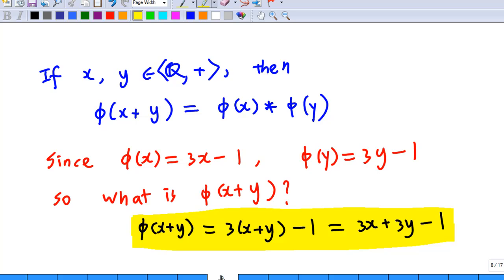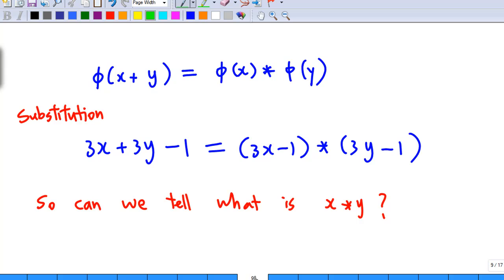So substitute this information: phi of x plus y is 3x plus 3y minus 1, phi of x is 3x minus 1, and phi of y is 3y minus 1. Then we have 3x plus 3y minus 1 equal to 3x minus 1 star 3y minus 1. So can we tell what is x star y?